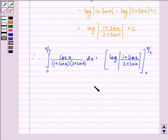Now we can find our answer that will be log mod 1 plus sin pi by 2 upon 2 plus sin pi by 2, that is 1 plus 1 upon 2 plus 1, minus log mod 1 plus 0 upon 2 plus 0.